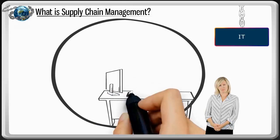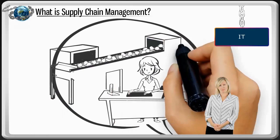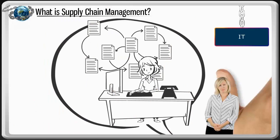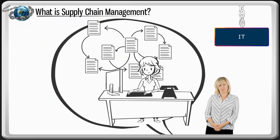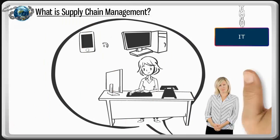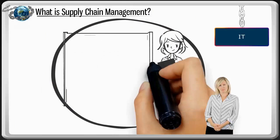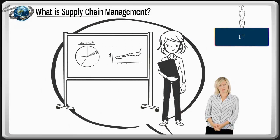IT: As an information technology professional, I automate processes, link businesses together using software, and develop reporting systems to manage data. All of these functions work together to positively impact my organization's bottom line.